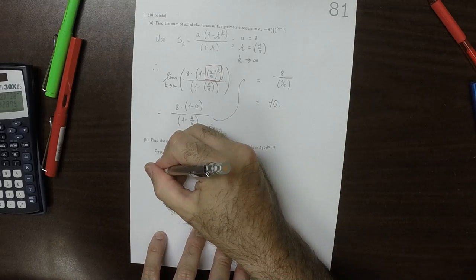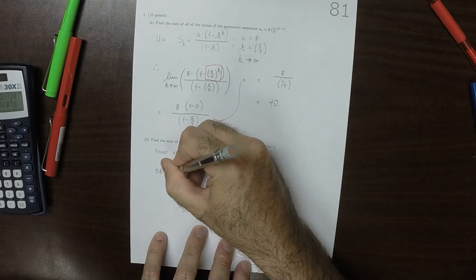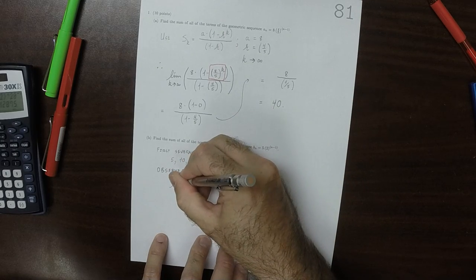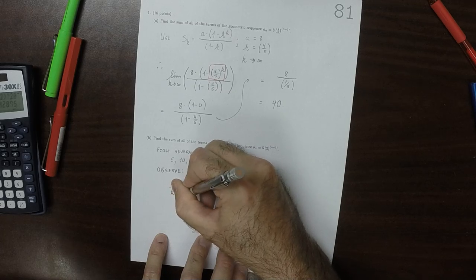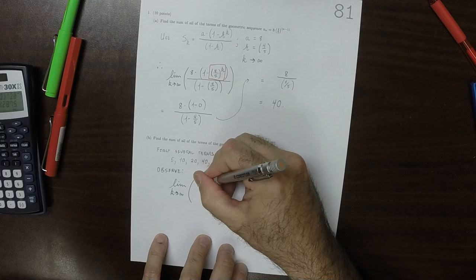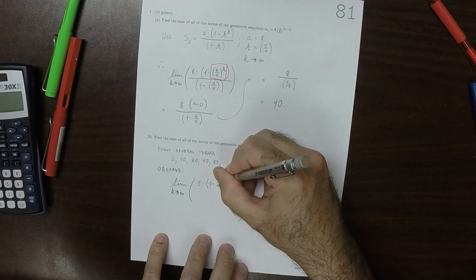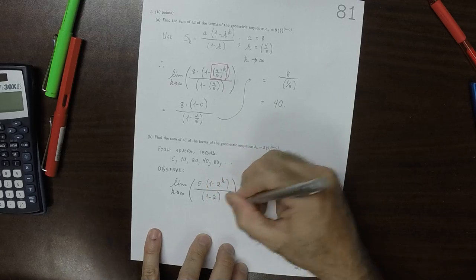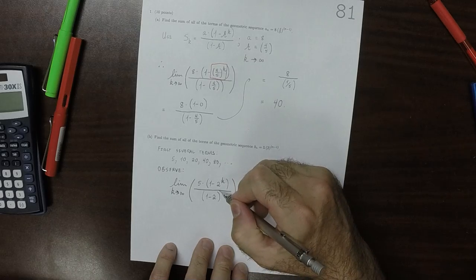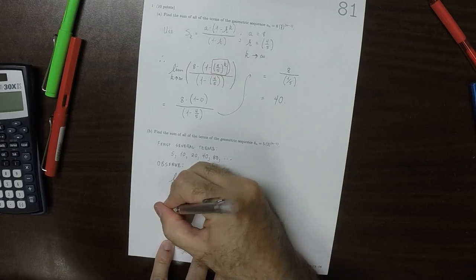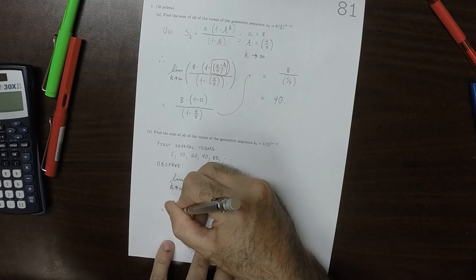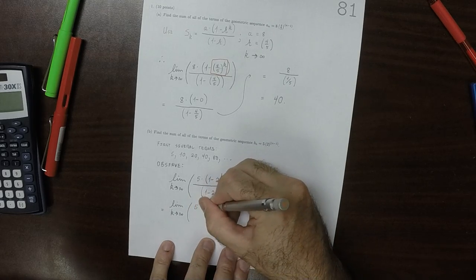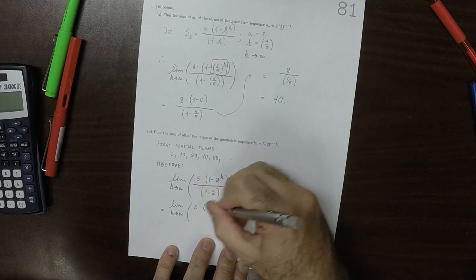Let's see how that works out. Observe that the limit as K goes to infinity of 5 multiplied by 1 minus 2 to exponent K, and then divide by 1 minus 2. We'll do just a little bit of simplification here so that it's clear what's going to happen. So the limit as K goes to infinity of 5 times 1 minus 2 to exponent K, and then 1 minus 2, that's negative 1.